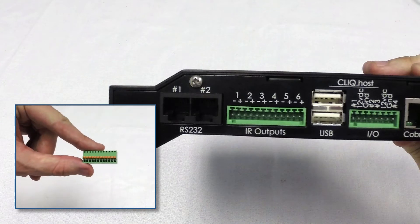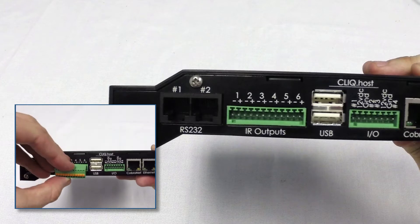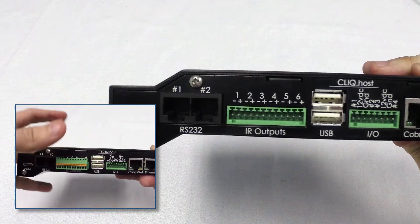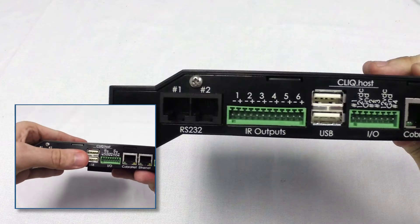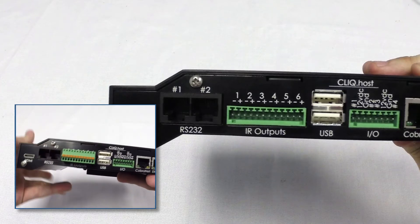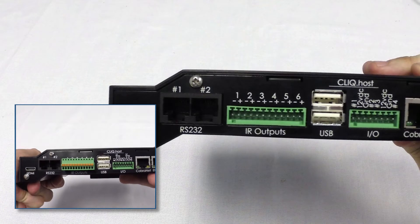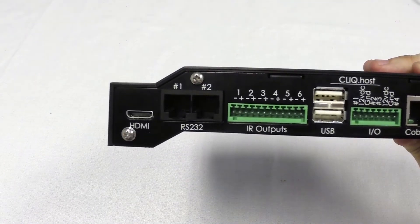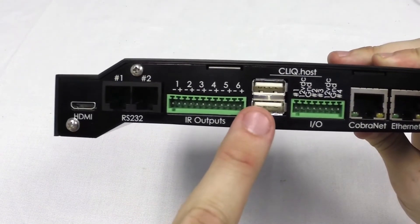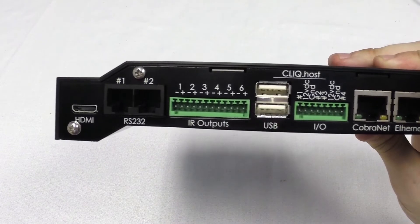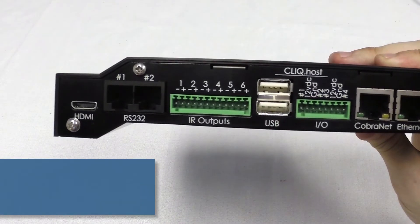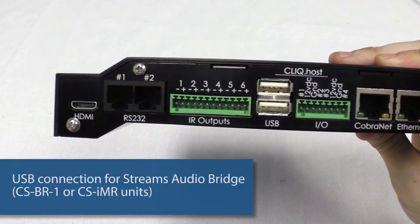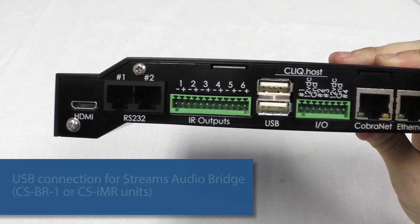Use these terminal blocks to make your connections. The blocks come with the Qlik. We also include a jig to hold the blocks so you can connect the wires before you insert the block. Next, we have a USB port. You'll use it to connect our audio bridge, which adds streaming soft sources like Pandora to the distributed audio solution.